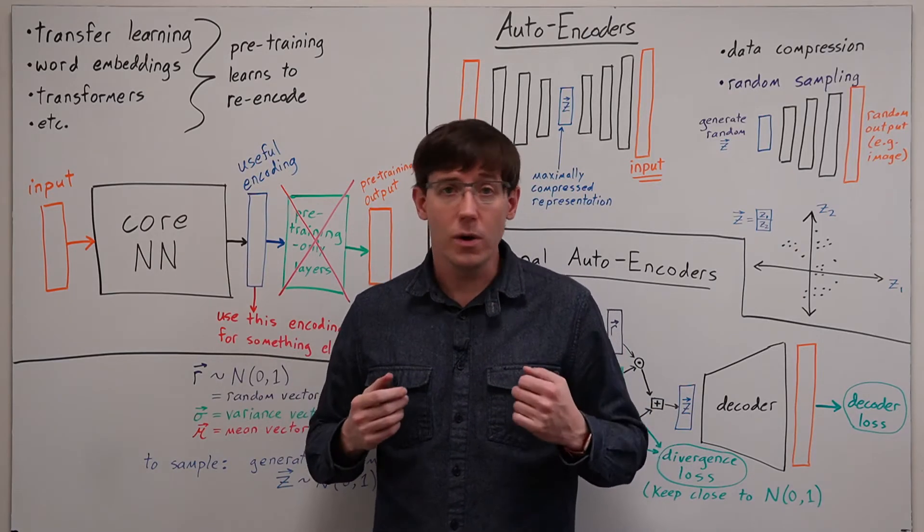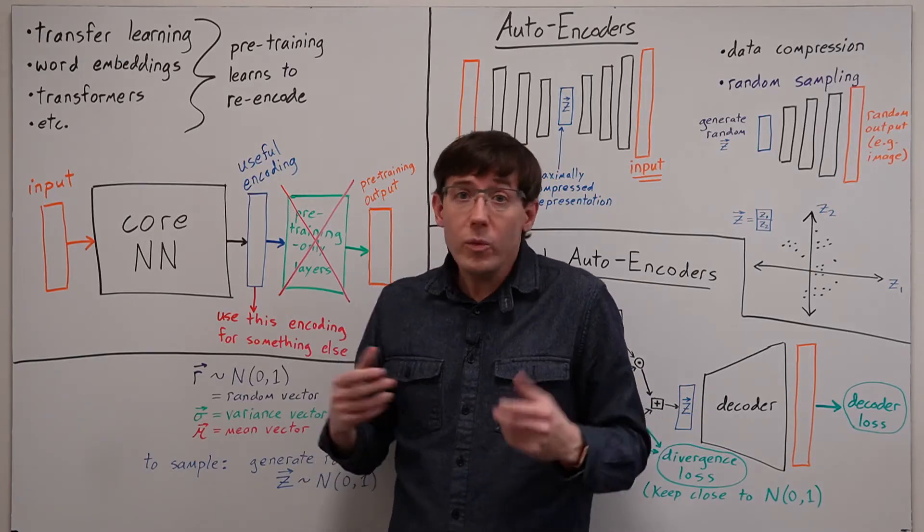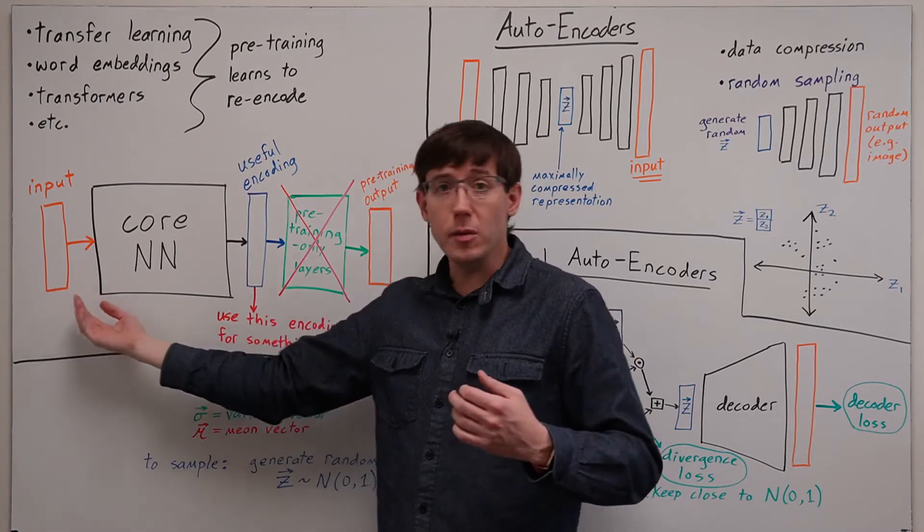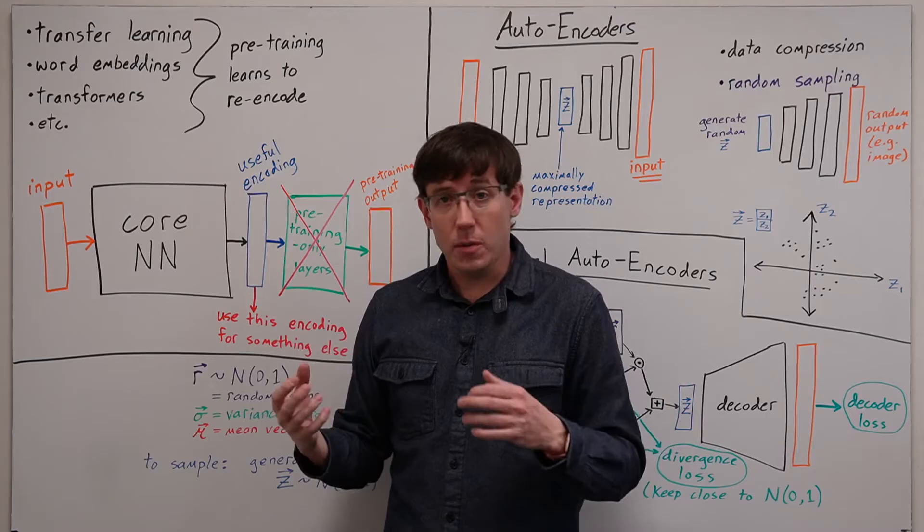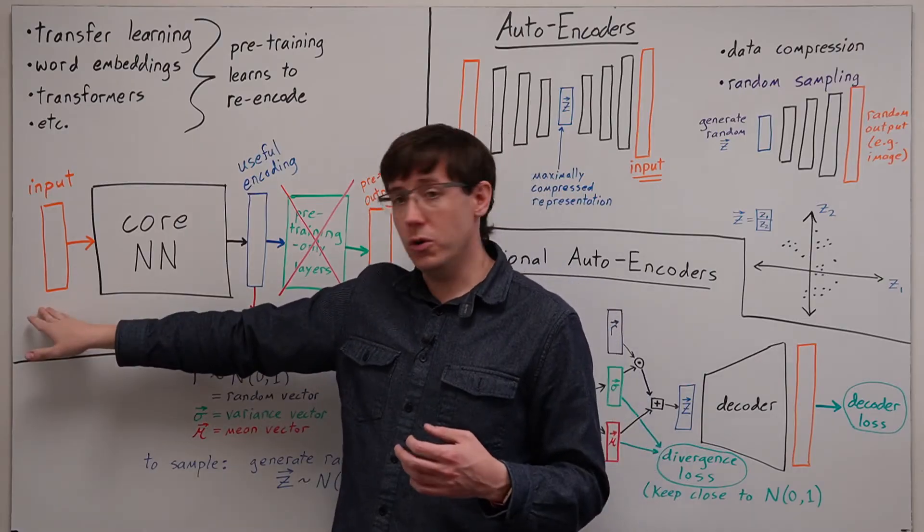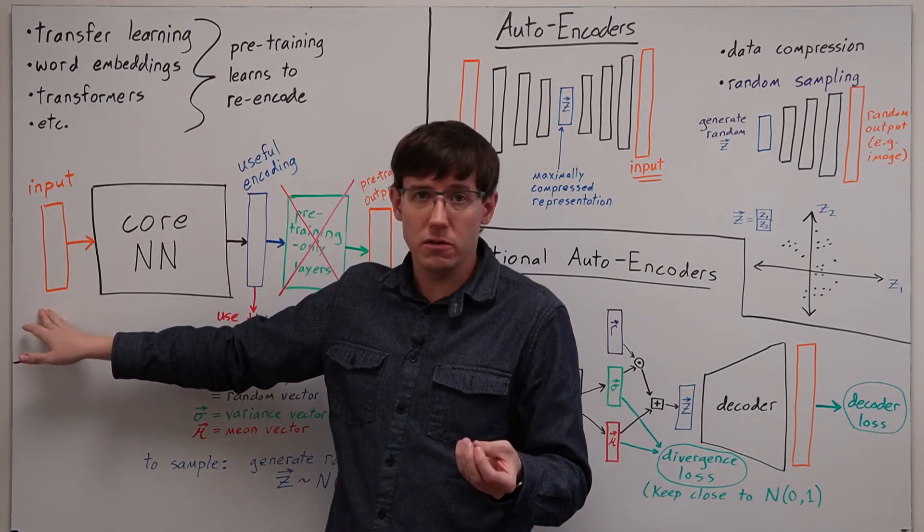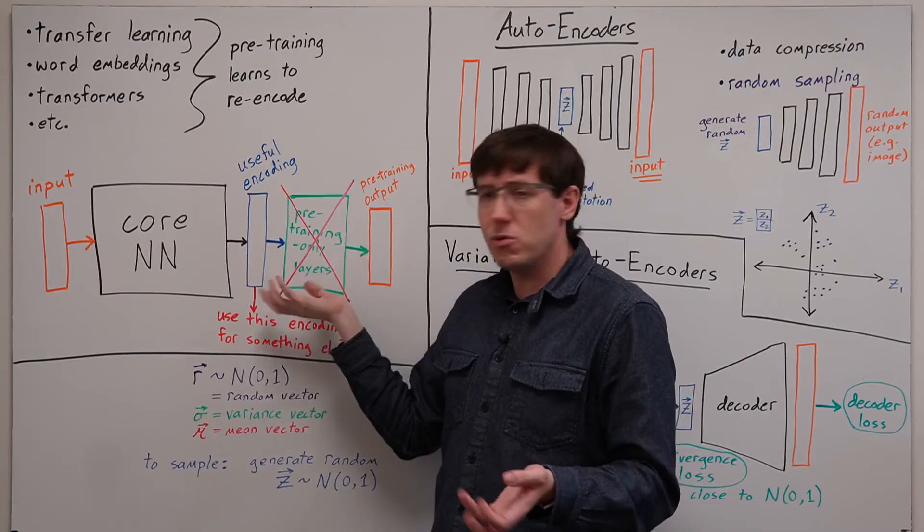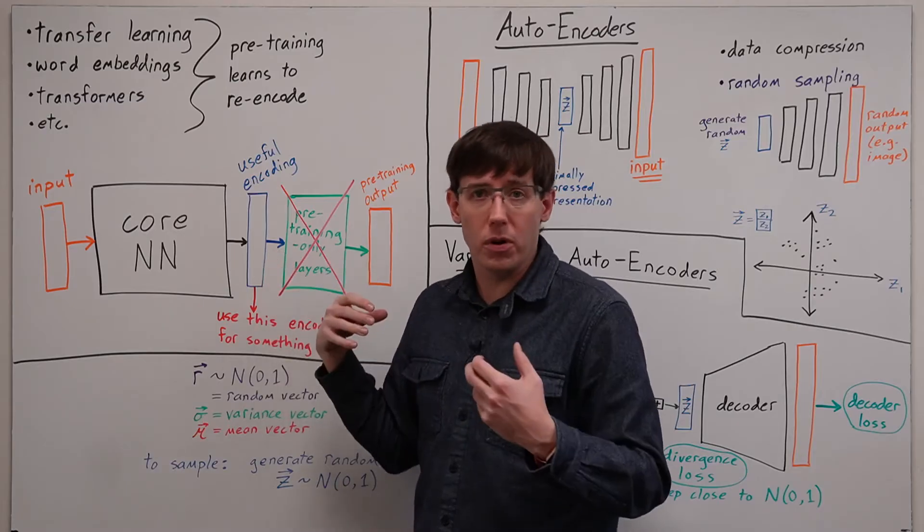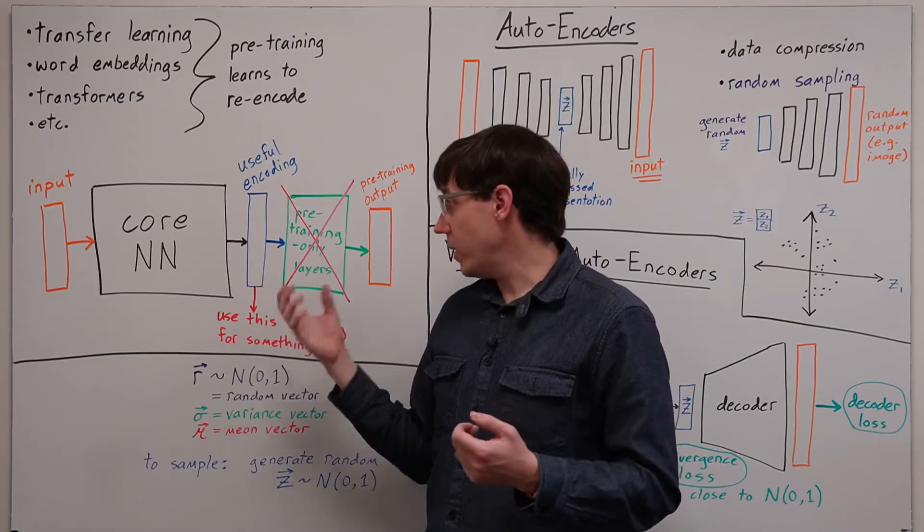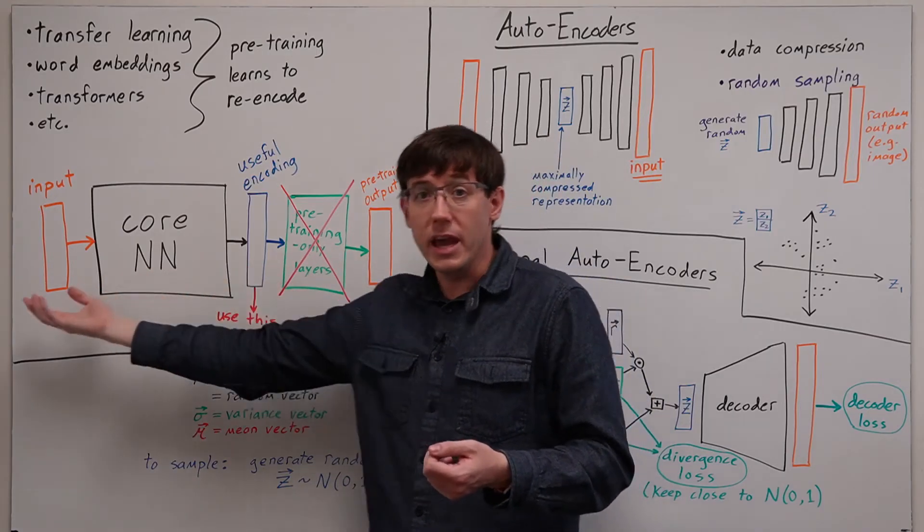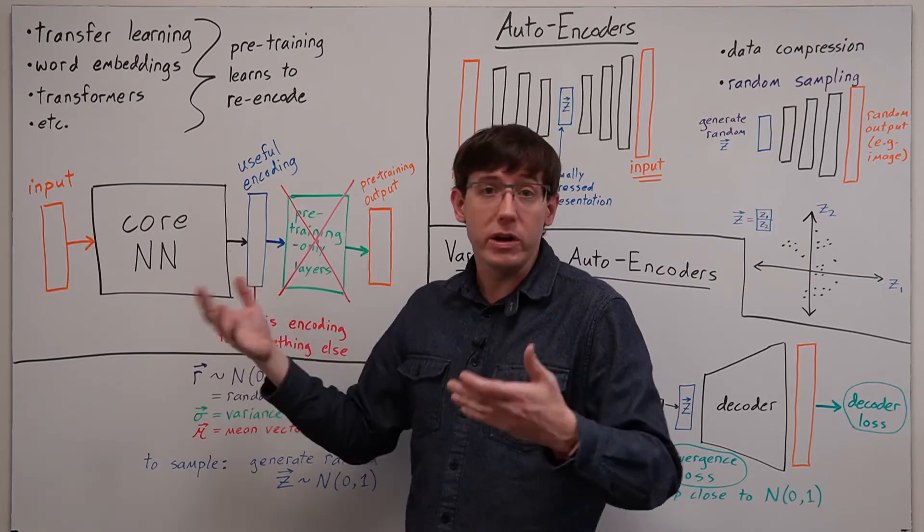That can subsequently be applied to other problems or data sets. When we do transfer learning with residual networks, we can think of the pre-training as learning some sort of useful image processing that can then be applied to a different data set of images. When we throw away the output layers of the pre-trained model and add different output layers for a new task, it's kind of like we have a new network that is processing the encoded data that the pre-trained model produces.